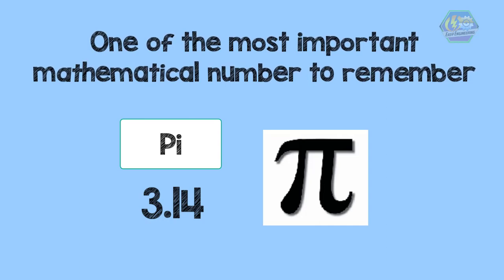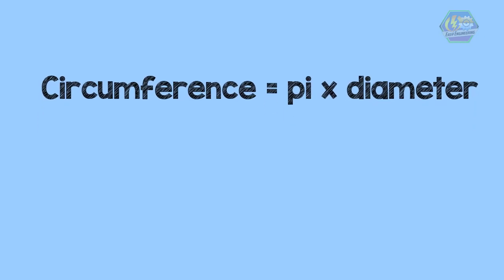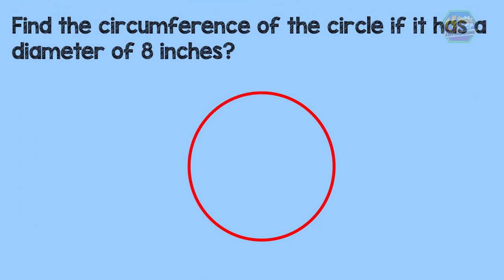Now you already know the parts of the circle and pi, so you are ready to solve the circumference and the area of the circle. The formula for finding the circumference of a circle is: circumference equals pi times diameter. Using abbreviations, we use C for circumference, the symbol for pi, and D for diameter. So the formula looks like this: C = πd. If we know the diameter, we just multiply it by pi to get the circumference.